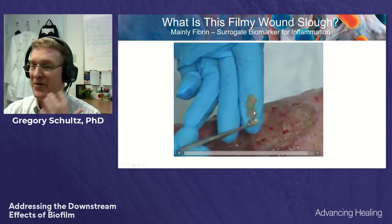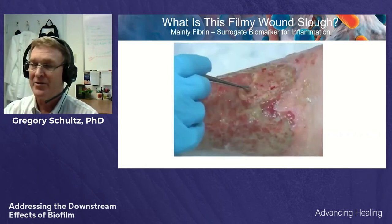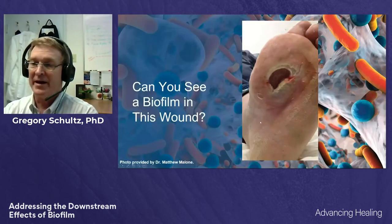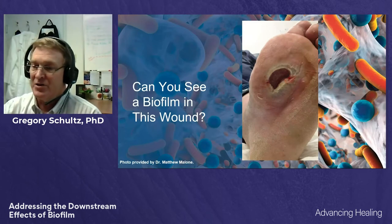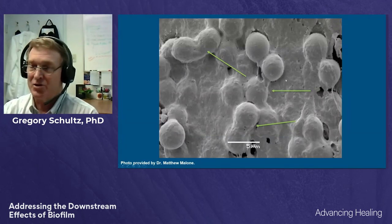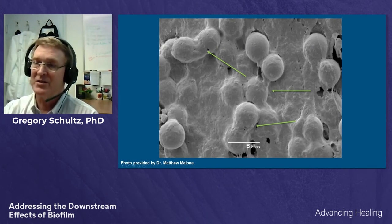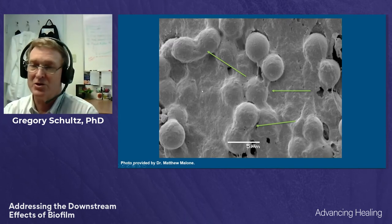Removing the slough is absolutely important, but you also must get rid of the components underneath the wound bed. Looking at a diabetic foot ulcer that appears well debrided with some granulation tissue, when Matt Malone took a biopsy and examined it with scanning electron microscopy, there was a clear biofilm matrix structure — in this case encapsulating staphylococcal material — that you couldn't see on the wound bed.